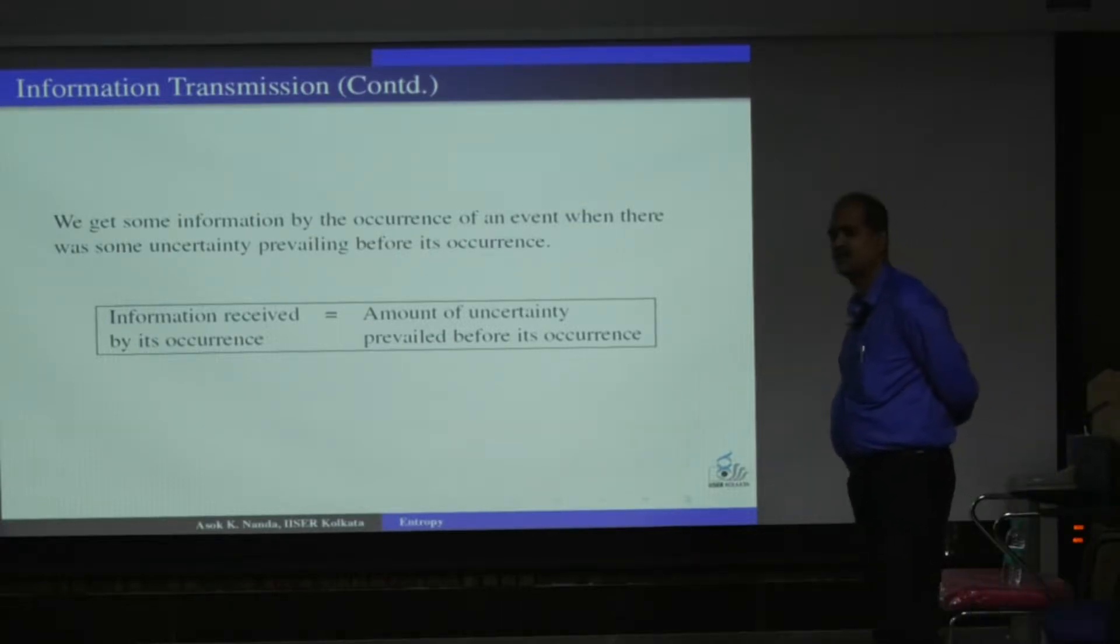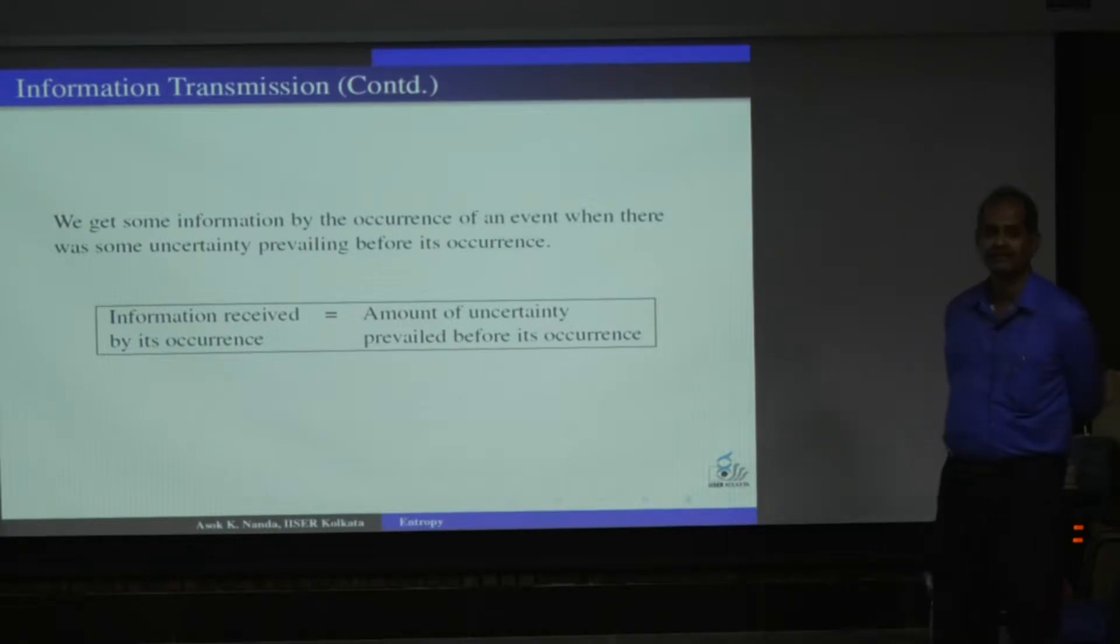Information received by occurrence of some event is same as the amount of uncertainty prevailed before its occurrence. If I have some uncertainty about something and this has happened, I know what has exactly happened. So now this information I have with me, there is no uncertainty now.